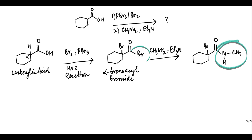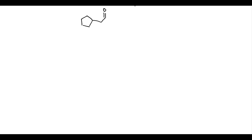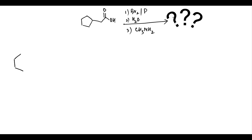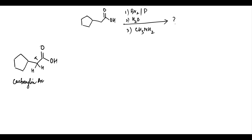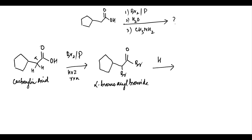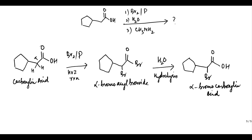Similarly, let us predict the product when this carboxylic acid is treated with bromine and red phosphorus, followed by hydrolysis, and then treatment with methylamine. The carboxylic acid has alpha-hydrogens and upon treatment with Br2 in the presence of PBr3, the HVZ reaction occurs, forming alpha-bromoacyl bromide. This upon hydrolysis forms alpha-bromo-carboxylic acid. This on further treatment with methylamine undergoes SN2 substitution to replace the bromine with the nitrogen nucleophile.